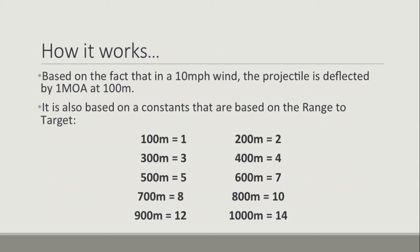So how it works. The British wind formula is based on scopes that are set up with minute of angle adjustments. So if you shoot MOA, this formula is a good one for you. It's also based on a .308 or 7.62 military sniper round. With that in mind, we know that a 10 mile an hour wind deflects the projectile by one minute of angle at 100 meters. It's also based on constants that are based on the range to target, and of course your data.